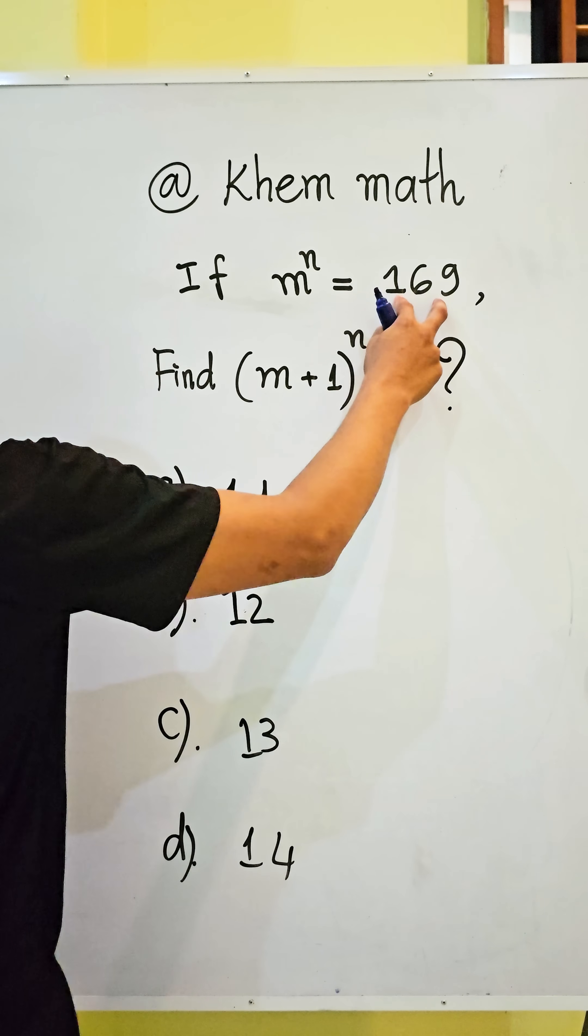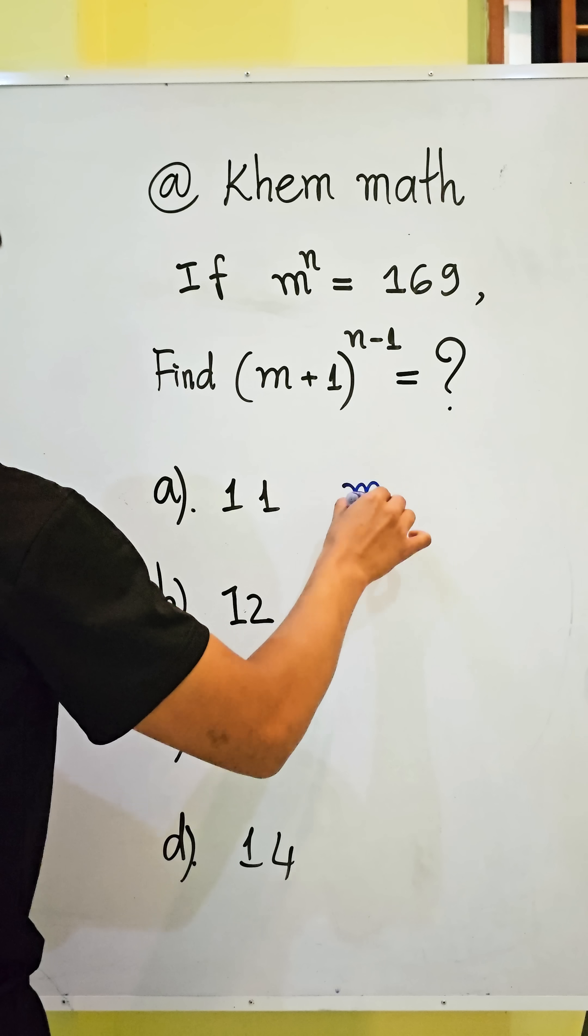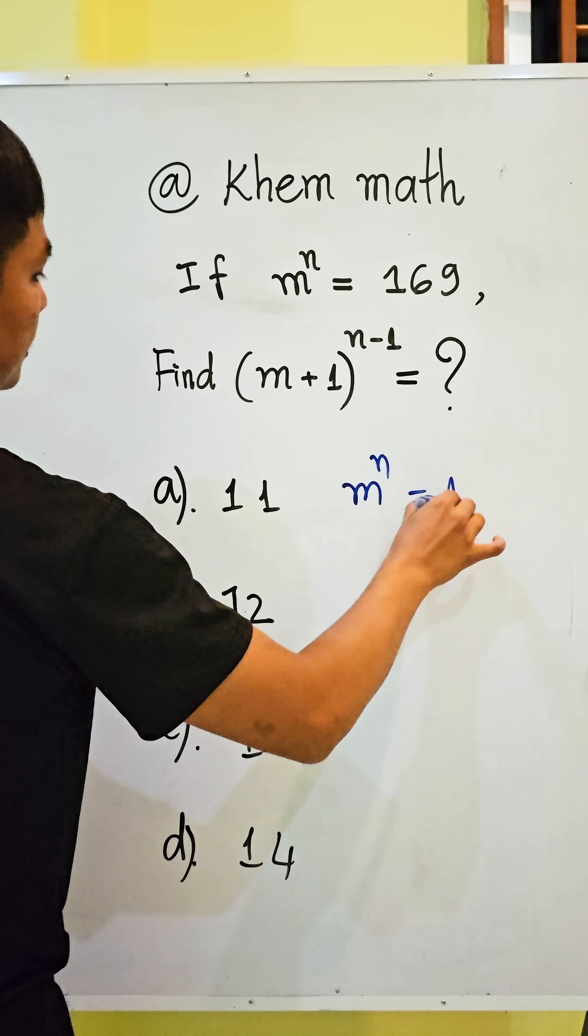So, 169 we can write it as 13 squared. So we get m power n equals 13 squared.